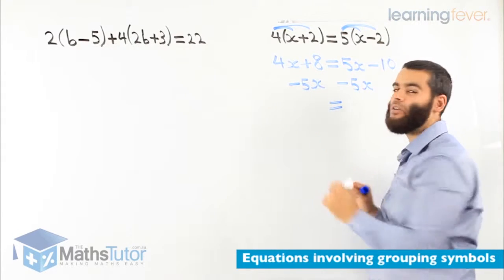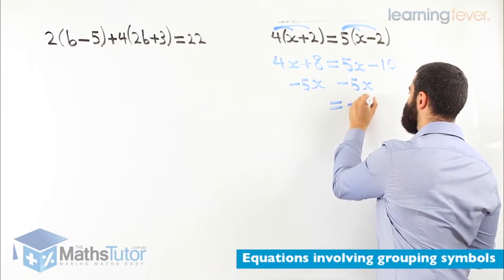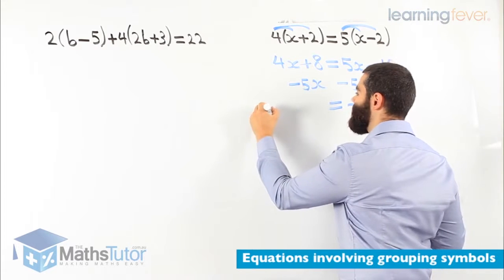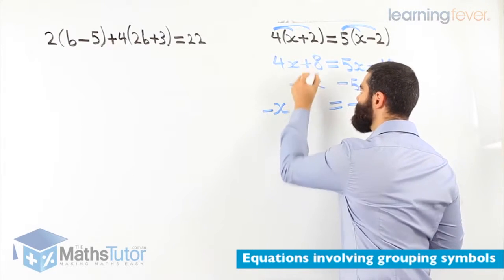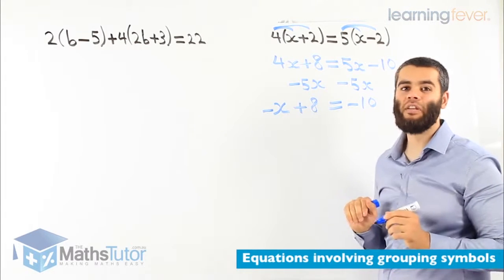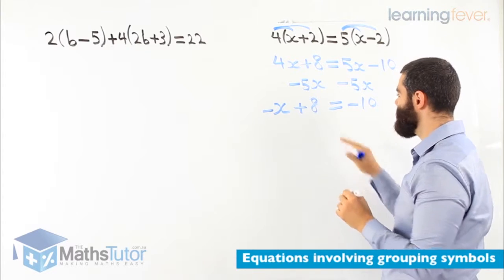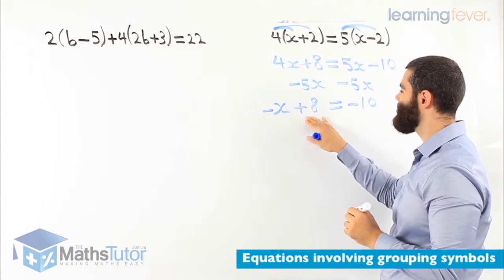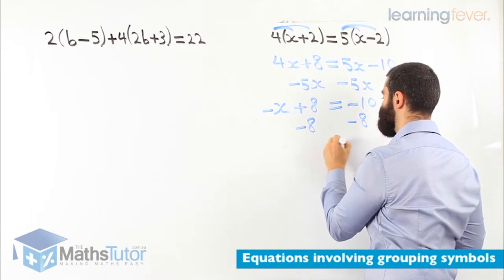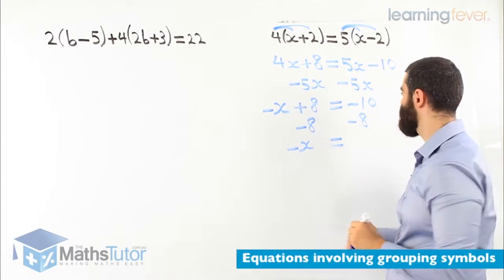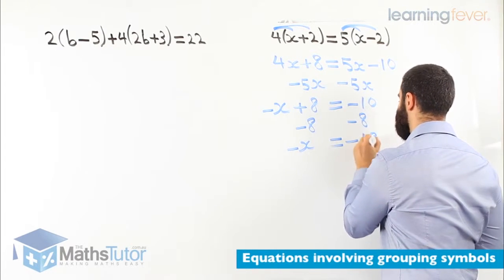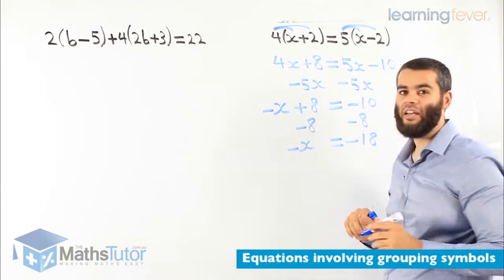So we're going to have 5x take away 5x is gone. We're left with negative 10. And 4x minus 5x is negative 1x. So negative x plus 8. So negative x plus 8 equals to negative 10. Now we go and we follow on. We know plus 8 is going to be minus 8 here, minus 8 on the other side. We're left with negative x equals negative 10 minus 8 is minus 18.